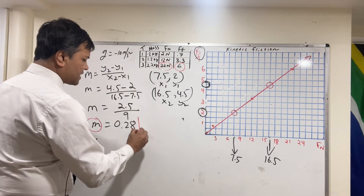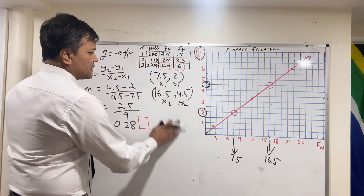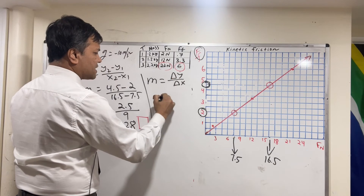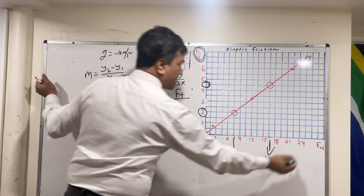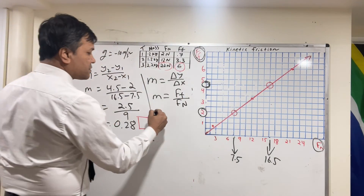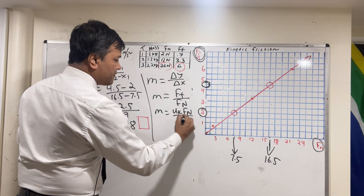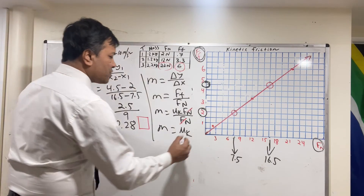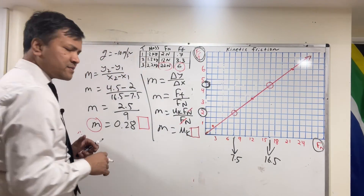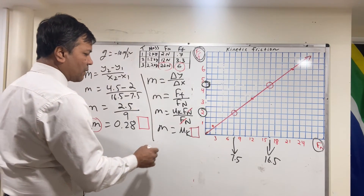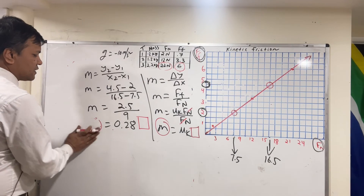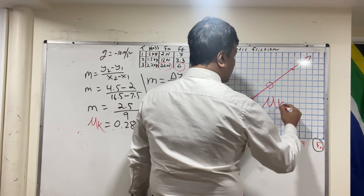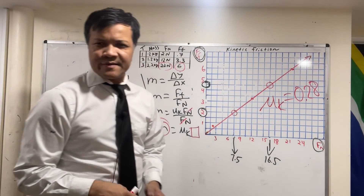What does the slope represent and what is its unit? The slope equals ΔF_f / ΔF_n. Since F_f = μ_k × F_n, and F_n cancels, the slope equals μ_k. There is no unit for μ_k — it is always between 0 and 1. So the slope of the best-fit line is 0.28, with no SI unit, and that value is our kinetic friction coefficient μ_k.